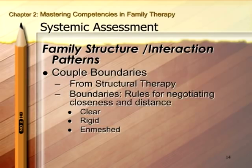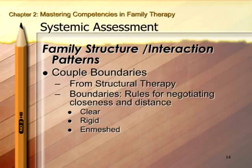On the other end of the spectrum, we have enmeshed boundaries, where there is too much interdependence. You will generally see expectations that the other person should feel and think the same way I do, and if they don't, that's a personal affront. There's a lot of pressure to conform in enmeshed relationships to the point where people are experiencing symptoms. This is very much culturally determined — where that line goes from being a clear, healthy boundary to where it becomes a more problematic boundary.